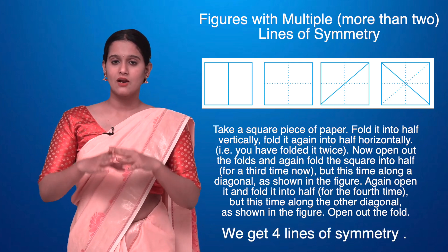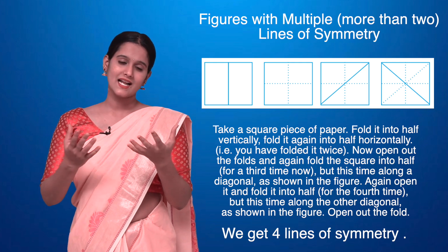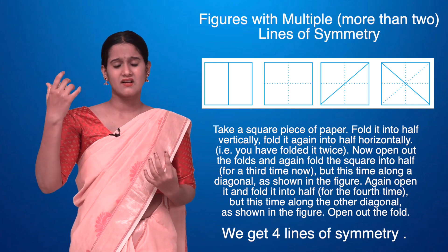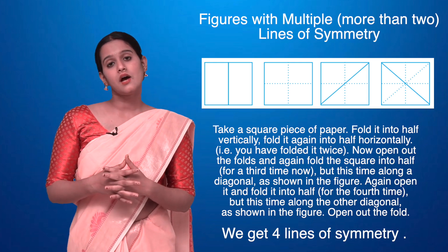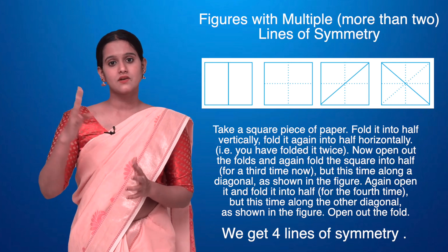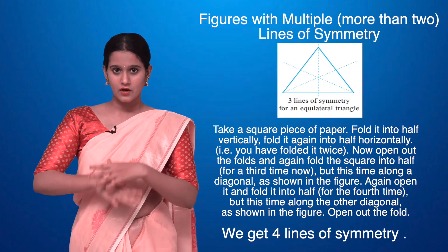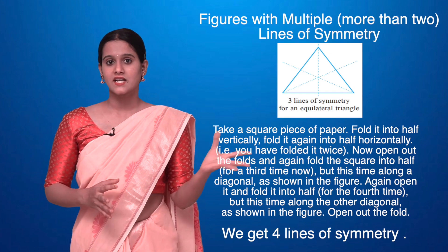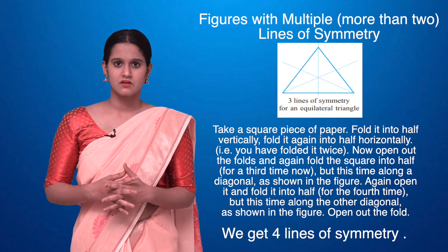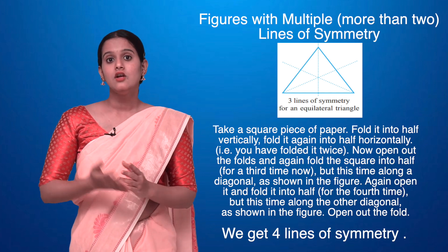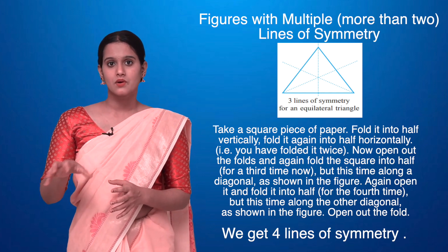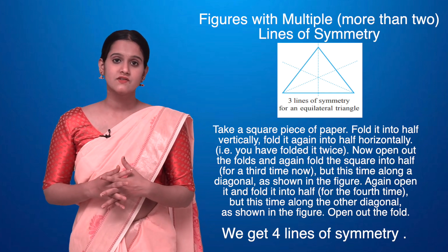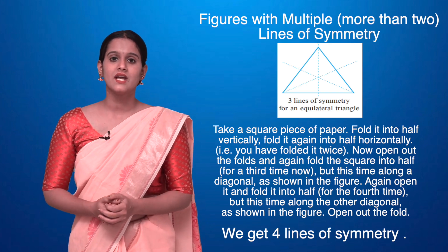I'll fold the square diagonally a third time — now I get three lines of symmetry. Folding diagonally the other way a fourth time gives four lines of symmetry total. So a square has four lines of symmetry, whereas a rectangle has only two lines of symmetry, because a rectangle has two pairs of equal opposite sides whereas a square has all four sides equal.